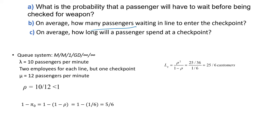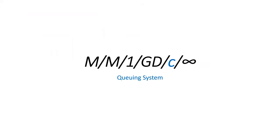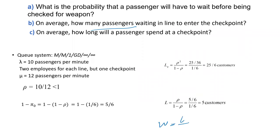Third question: On average, how long will a passenger spend at a checkpoint? It's talking about time, so it's W as a whole. To calculate W, first calculate L and divide by lambda. L is rho over 1 minus rho, which is 5 over 6 divided by 1 over 6, the whole thing divided by lambda, which is 10. That gives me 0.5, so that is half a minute.